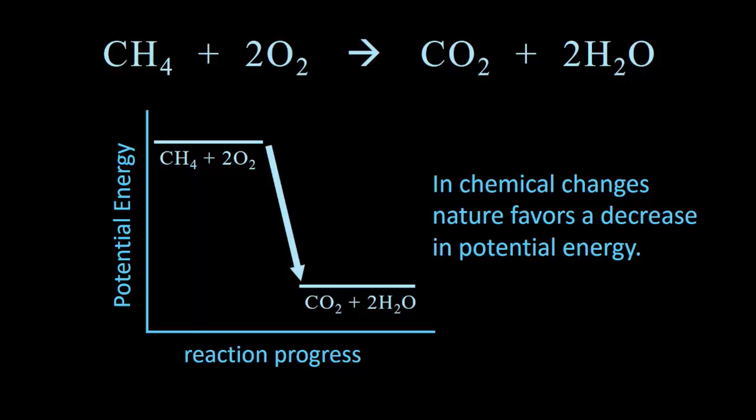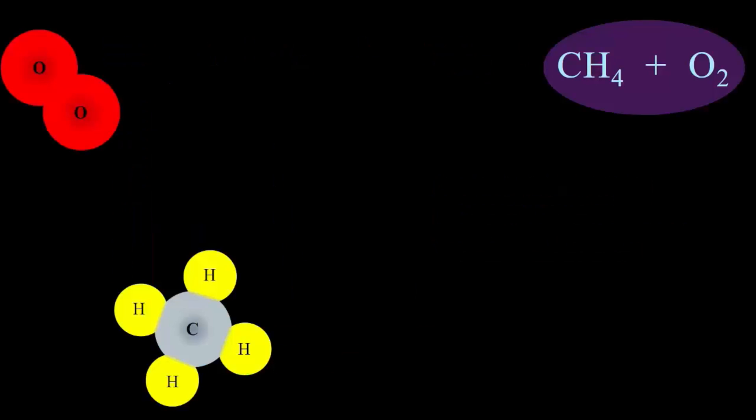But there's a bit of an obstacle here. We have that arrow telling us that the stuff on the left magically turns into the stuff on the right. But how does that happen? If we take a look at what that arrow means, what happens to make the methane and oxygen become carbon dioxide and water, then we can begin to understand what is fire.